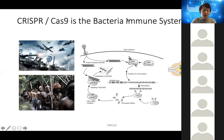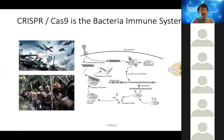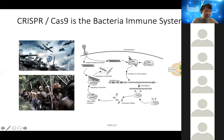You wonder, humans' immune system is really advanced. We have T cells, B cells, natural killer cells, dendritic cells, macrophages — all different things, like planes, tanks, and aircraft carriers, everything.